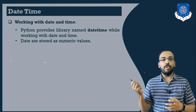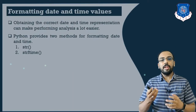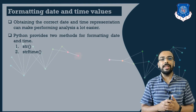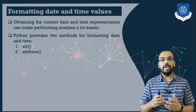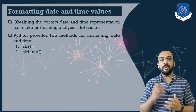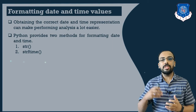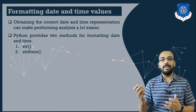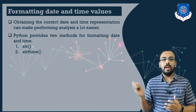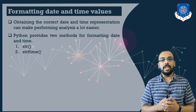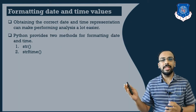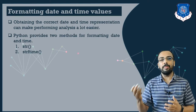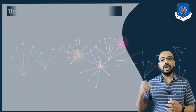Next, we are going to see how we can format date and time values. Whenever we are performing data analysis, we need to transform or convert our date and time into a specific format. For example, from the entire date and time we may need to extract only the date, only the hour, or only the minutes. Python's datetime module provides two functions: str() and strftime(), where strftime means string formatting of time.